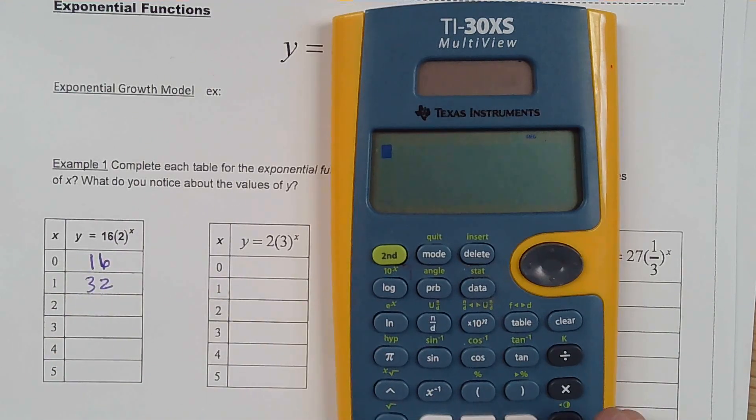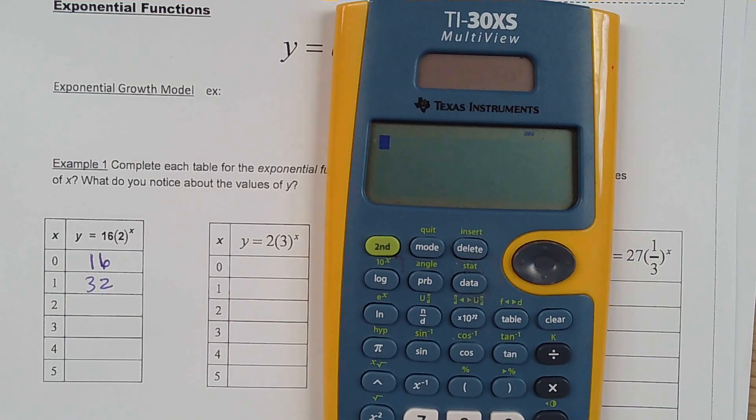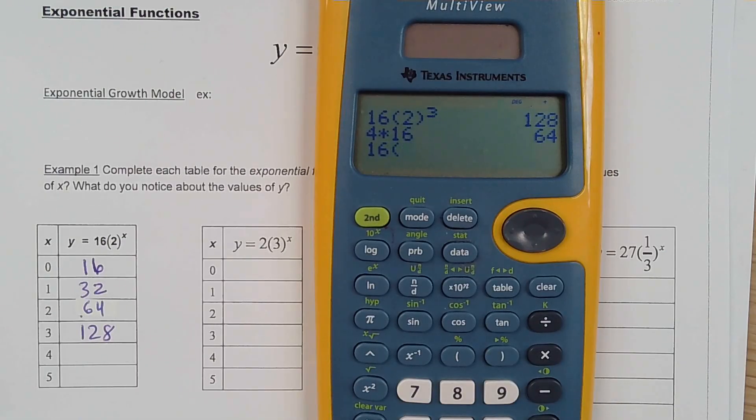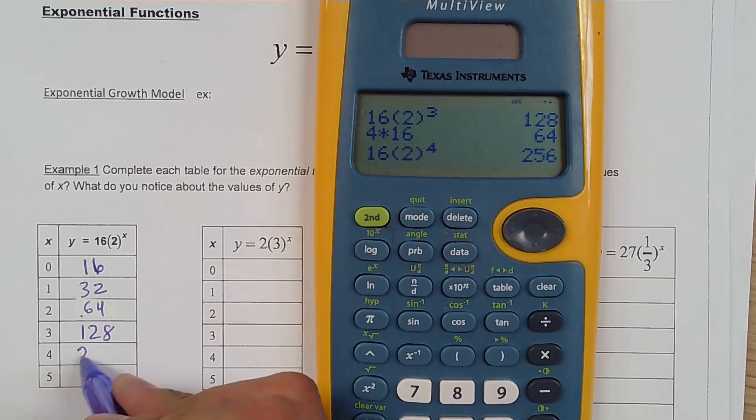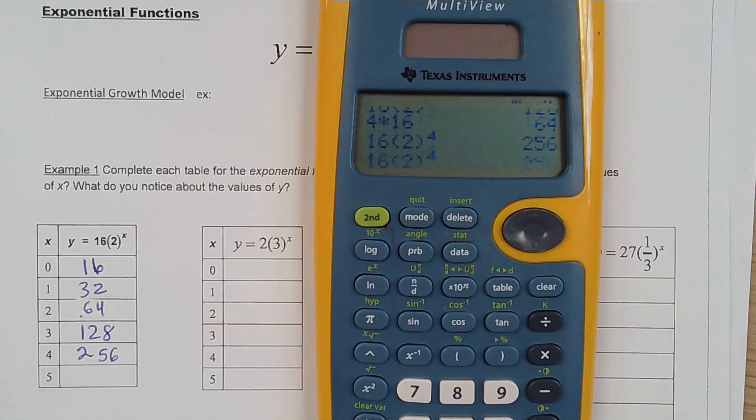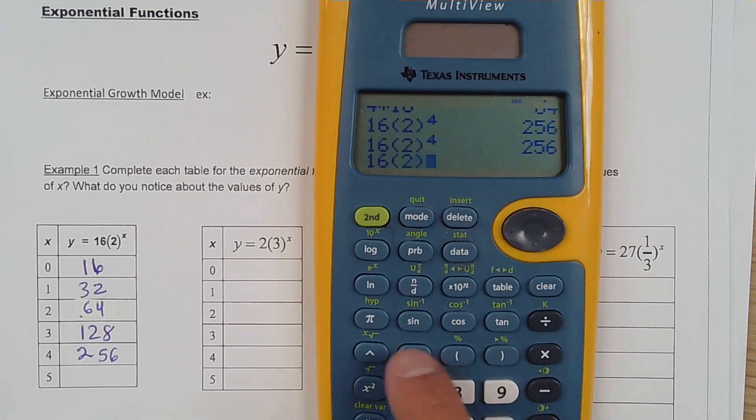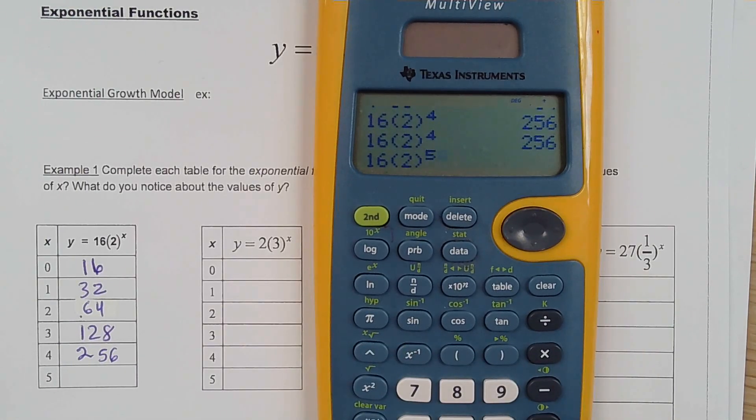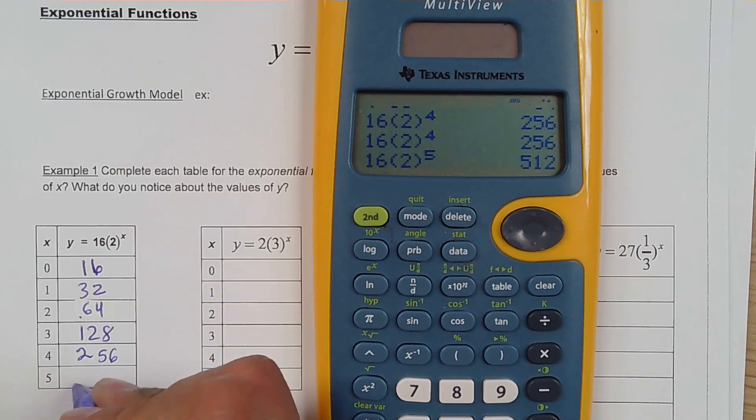Now the next one I may need a calculator is going to be 16 times 2 to the 4th. So you'll see to learn to appreciate this one. After the next one is going to be 16 times 2 raised to the power of 5 and that's going to be 512. Alright so that took me a good two minutes to do that.